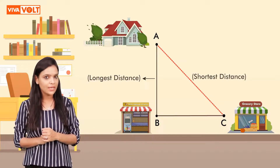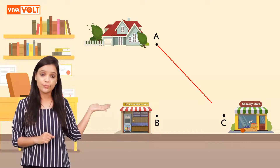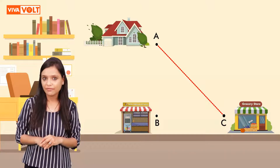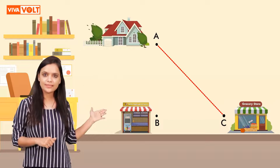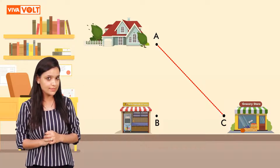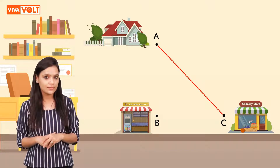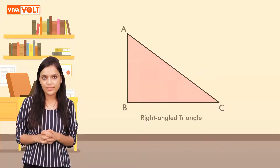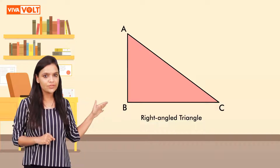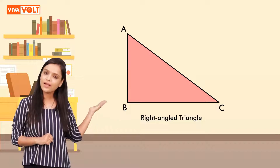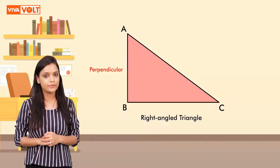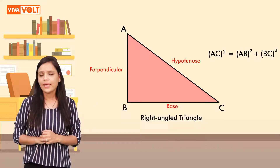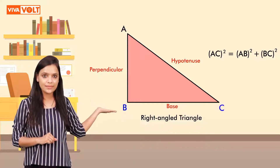Let's draw a diagram to solve this. When we move directly from point A (house) to point C (grocery store), we cover the distance in less time — this route is the shortest. To find the shortest distance, we must be familiar with the Pythagoras theorem. According to the Pythagoras theorem, in a right-angled triangle, the square of the hypotenuse is equal to the sum of squares of the other two sides. The sides are named perpendicular, base, and hypotenuse: AC² = AB² + BC², where AB is the perpendicular, BC is the base, and AC is the hypotenuse.